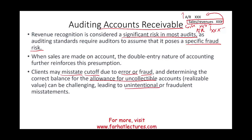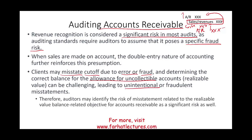Therefore, auditors may identify the risk of material misstatement related to realizable value — the balances-related objective for account receivable — as a significant risk as well. We also have to be aware of the risk around the allowance, because the allowance is a result of account receivable. Sales create account receivable; account receivable generates allowances, which is an amount we don't expect to collect. That amount is estimatable.